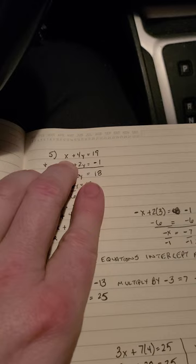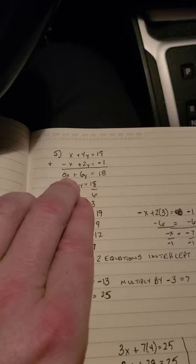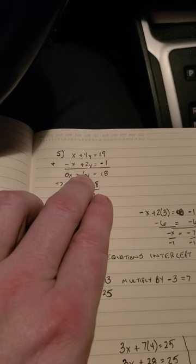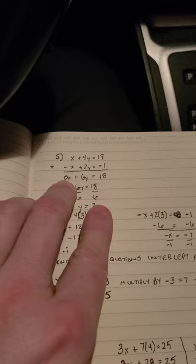So your two equations were X plus 4Y equals 19, and negative X plus 2Y equals negative 1. Now on this equation, you're just going to add the like variable. So you have X minus X, which is going to be 0X, plus 4Y plus 2Y, which is a positive 6Y. And then you're going to have 19, and you're going to have an addition of negative 1, which equals 18.